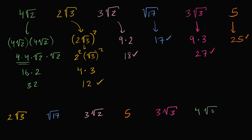And we're done. That was pretty neat — without a calculator, we were able to sort these irrational numbers, and the ones that involved the square root of something that is not a perfect square.